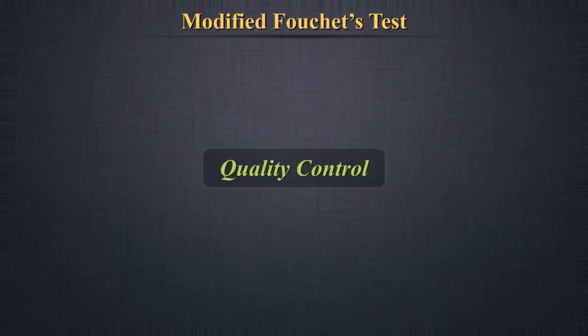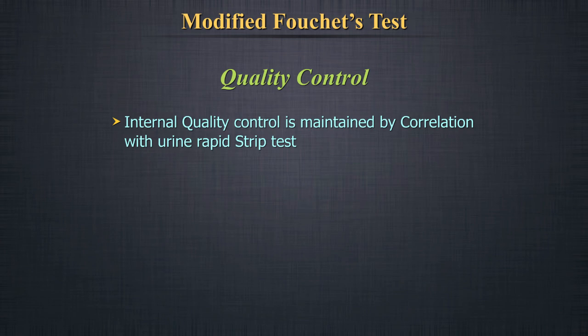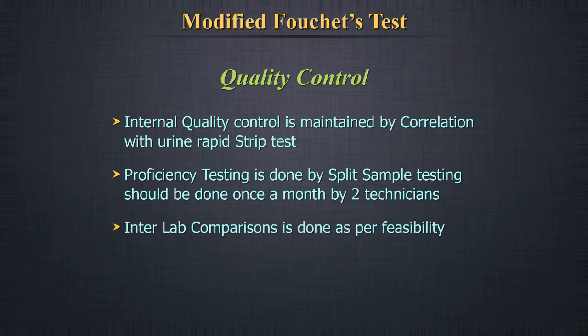Quality Control: Internal quality control should be maintained by correlation with urine rapid strip test. Proficiency testing can be done by split sample testing once a month by two technicians. Interlab comparisons can be done as per feasibility.